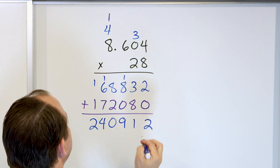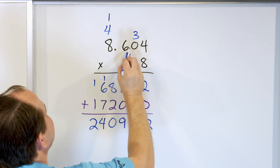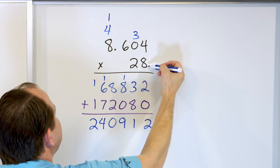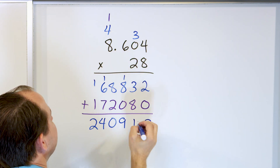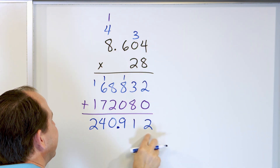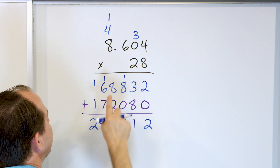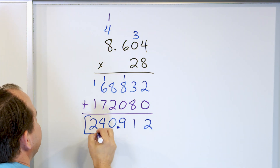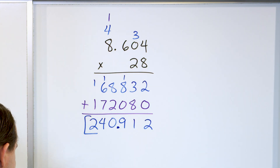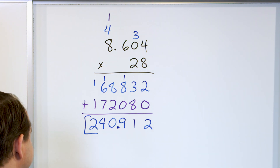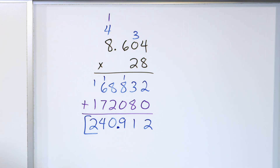Where does the decimal go? In our problem we have 3 digits after the decimal and nothing from the whole number 28. So in our answer we must have 3 digits after the decimal as well. The final answer is 240.912.